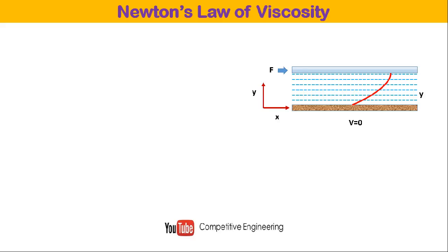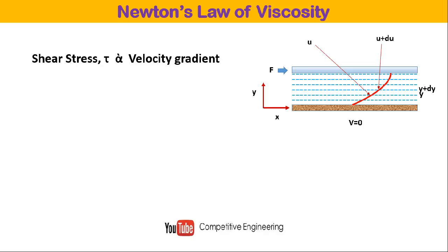Consider any fluid layer at a distance y from the flat plate with velocity u. Consider another point at y plus dy from the flat plate where the velocity is u plus du, which means that the velocity increases as the distance from the flat plate increases. The term du by dy is called the velocity gradient — it indicates how the velocity increases with distance from the flat plate.